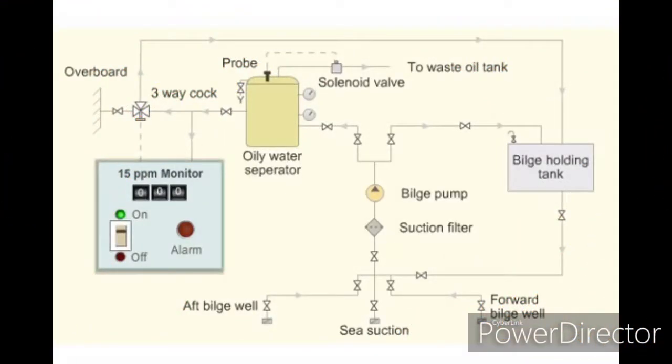The schematic diagram shows an engine room bilge system. A bilge pump transfers the bilges from bilge wells to the bilge holding tank. Periodically, the bilge pump transfers the bilge water from the bilge holding tank to the oily water separator for purification.